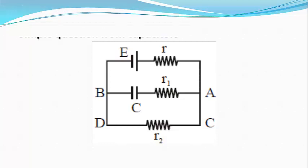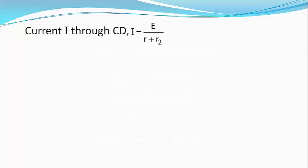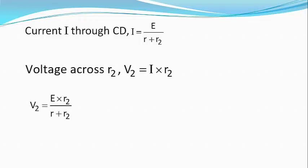In the steady state there is no current through the branch AB and the current will pass only through the branch CD. The current is given by I equals E divided by small r plus R2, and the voltage across R2 is V2 equals I into R2, which equals E into R2 divided by R plus R2.